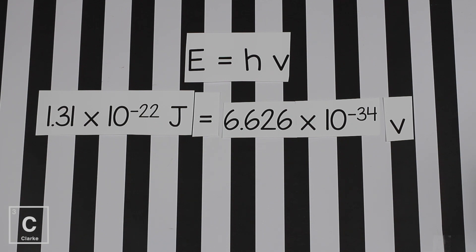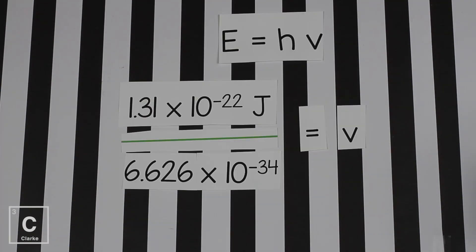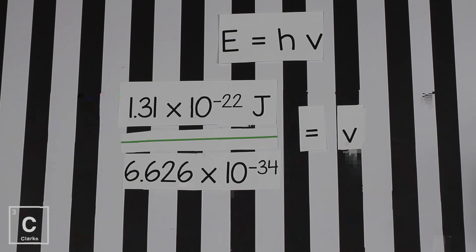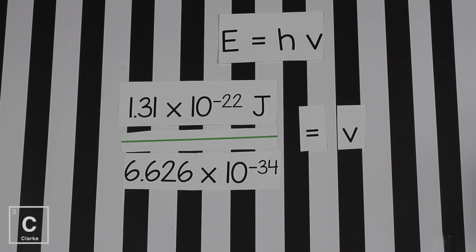We want it to say frequency equals. Let's rearrange this so it can say that. Frequency equals the energy divided by Planck's constant. And remember how to type in scientific notation into the calculator. If you don't, just click that link for the video.